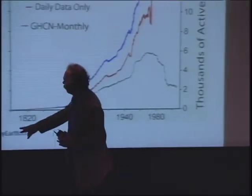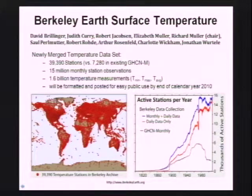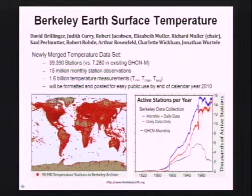Our website is berkeleyearth.org. We're getting some funding from the Lawrence Berkeley Laboratory, some from private foundations including the Folger Foundation. We're hoping to come out with not only a new estimate of global warming with fully established errors — we think a new result — but also to make the data available in a merged format so if you want to get into this business, it will be relatively easy. There won't be a huge barrier of how to read the format. It will be completely transparent. We expect to hear from us within a few months.